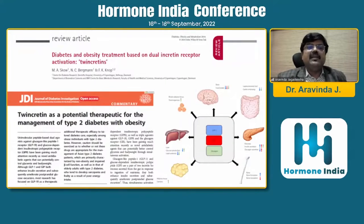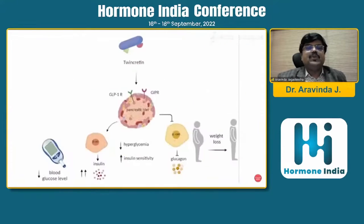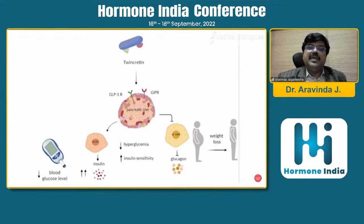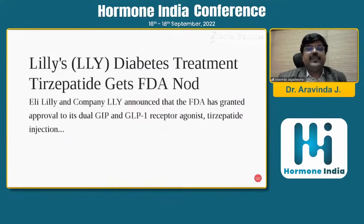This article, published way back in 2016, tells about the twincretin — describing it as a potential therapeutic for the management of type 2 diabetes with obesity. You can see here how the twincretin acts on the pancreatic incretins, that is GLP-1 and GIP, and how it leads to decreased glucose levels, increased insulin sensitivity, ultimately leading to weight loss and improved diabetes control.